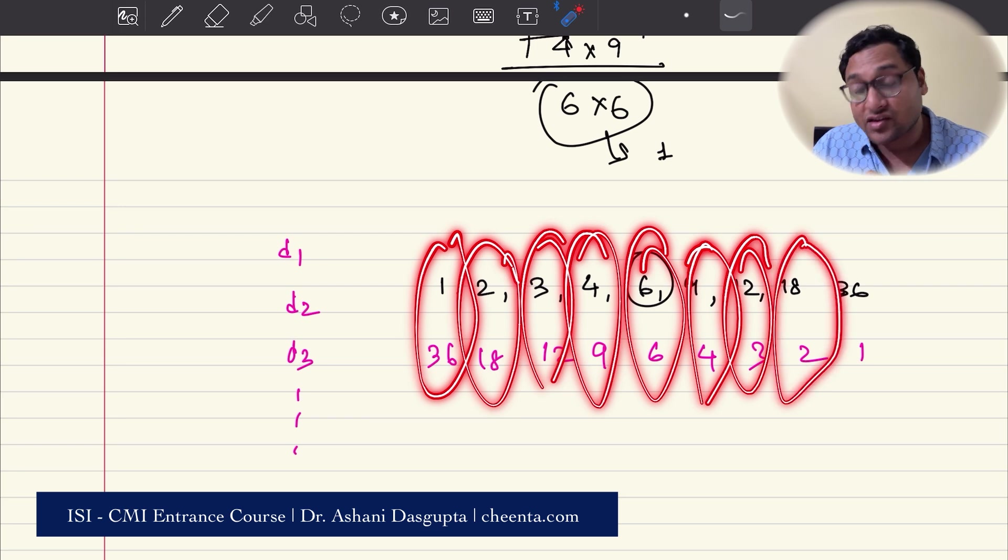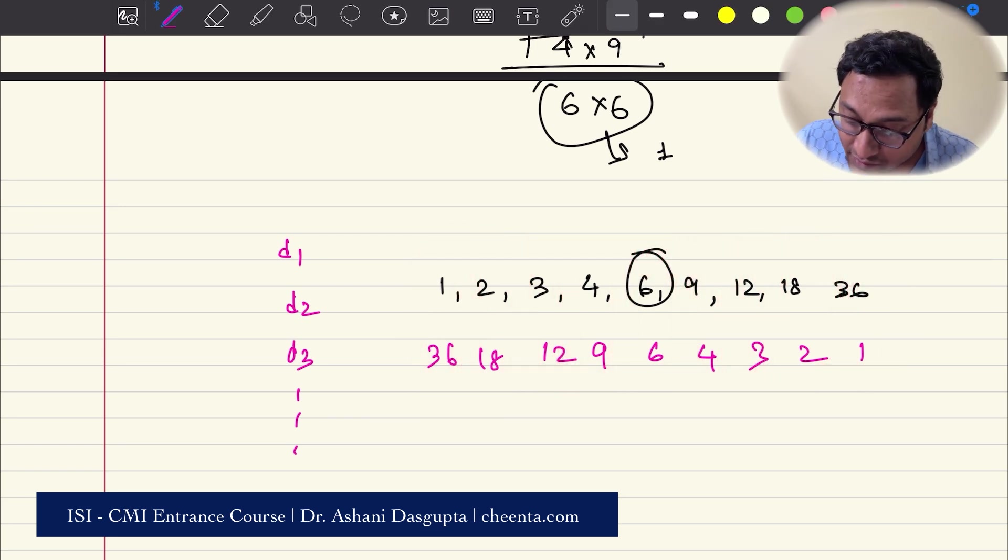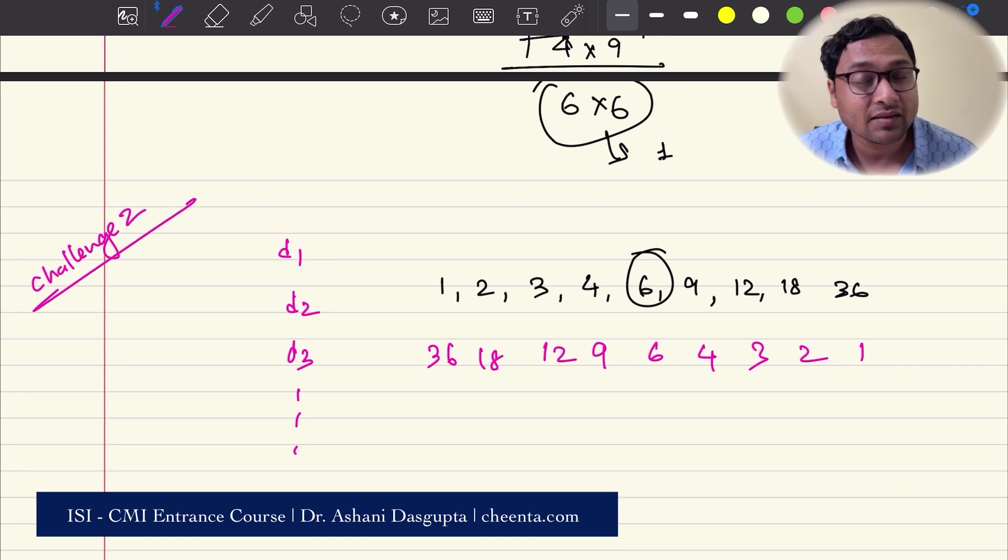So here's a challenge, challenge 2. Can you say why this automatic pairing happens? If you just write it in the decreasing order and increasing order, put one of them at the bottom of the other, the pairing happens automatically. Why? Can you give a rigorous proof of that? That's the second one.